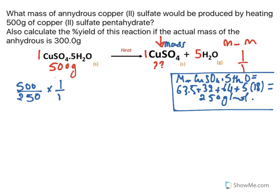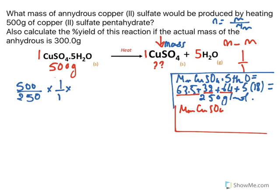In order to get the mass, using this formula n equals mass over molar mass, I need to multiply by the molar mass of copper sulfate. The molar mass of CuSO₄ only, which is the anhydrous, is 63 plus 32 plus 64, so it is 63.5 plus 32 plus 64.